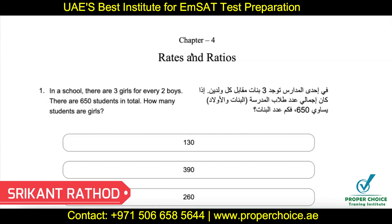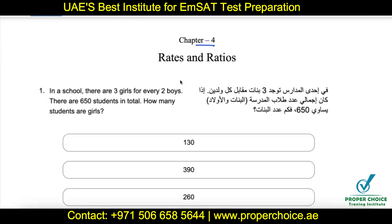Hey guys, welcome back! In today's session we're going to discuss chapter number four, which is rates and ratios. This is a part of statistics for MSAT Achieve Math. In the previous chapter we discussed mean, median, mode, probabilities, percentages, and data types. If you haven't gone through those, please follow the link in the description box below. Also subscribe to my channel so you'll be notified whenever I upload new videos.